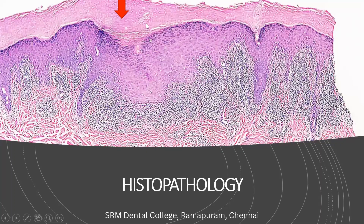The second finding is hypergranulosis. In both parakeratinized and orthokeratinized epithelium, there is a granulosum layer just beneath the corneal layer, called so because it contains keratohyaline granules giving a purplish color. In lichen planus, the granulism layer is thickened due to an increase in cell number - this is called hypergranulosis.